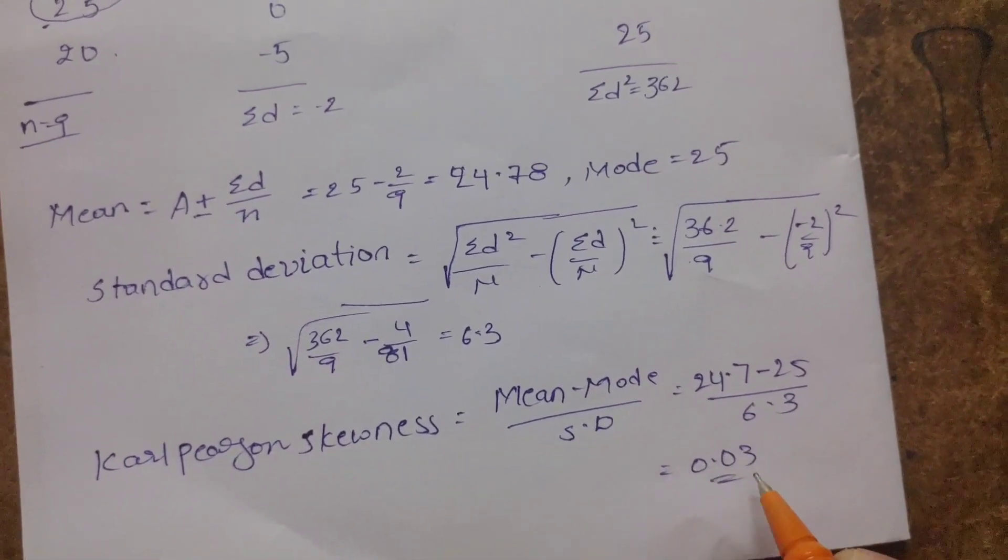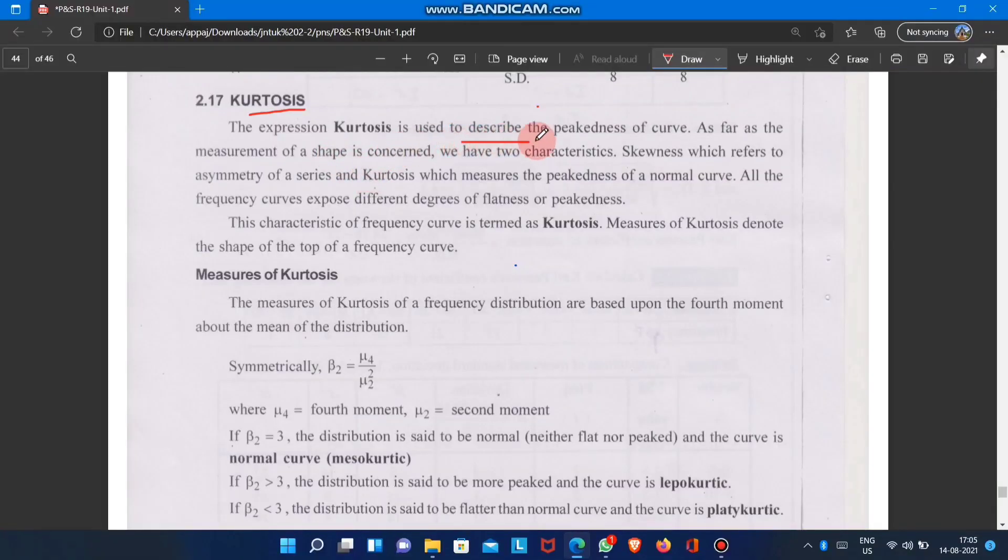This is the result. Now moving to kurtosis - this is also an important topic. The term kurtosis is used to describe the peakedness of a curve. We use kurtosis to describe the shape of curves. The characteristic of the frequency curve is termed as kurtosis. Measure of kurtosis denotes the shape of the top of the frequency curve. Measure of kurtosis: beta 2 equals mu4 by mu2 whole squared.